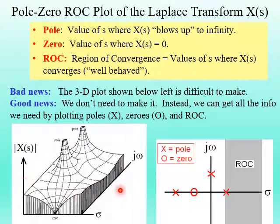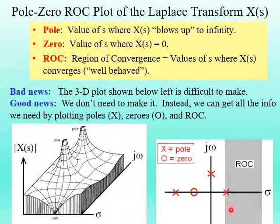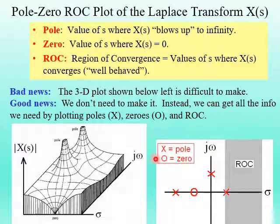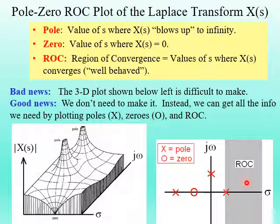The good news is we don't have to generate that complicated 3D plot. We can get all the information we need by constructing a simple two-dimensional pole-zero ROC plot. We use the symbol X for a pole, the symbol O for zeros, and we shade in the region of convergence.